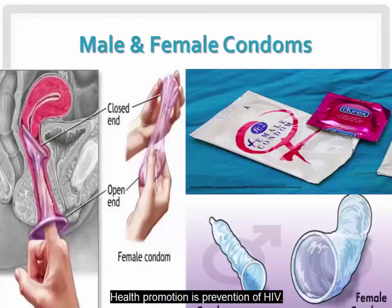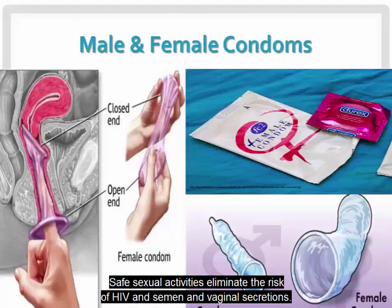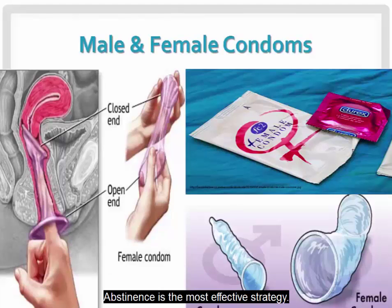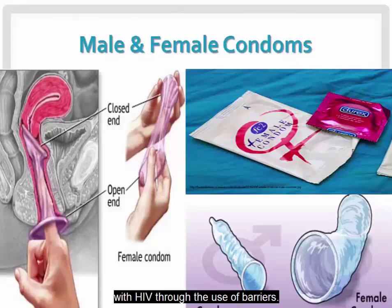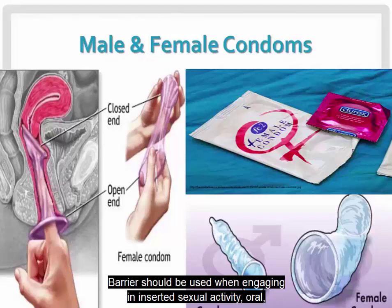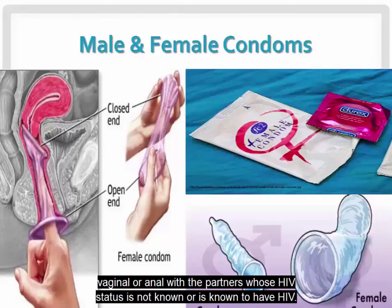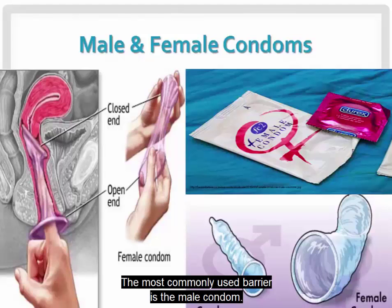Health promotion for HIV prevention: safe sexual activities eliminate the risk of HIV transmission through semen and vaginal secretions. Abstinence is the most effective strategy, but there are safe options for those who cannot or do not wish to abstain. Risk-reducing sexual activities decrease the risk of contact with HIV through the use of barriers. Barriers should be used when engaging in any sexual activity — oral, vaginal, or anal — with a partner whose HIV status is not known or is known to be HIV positive. The most commonly used barrier is the male condom.